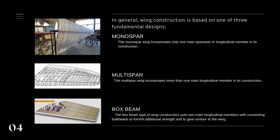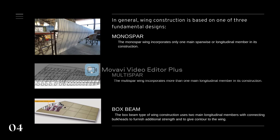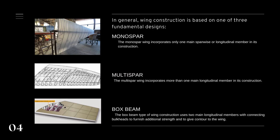The box beam or box spar uses two main longitudinal members with connecting bulkheads to furnish additional strength and to give contour to the wing. Tensile and compressive stresses are carried in the top and bottom of the box beam, and the sides act as webs to give the beam rigidity. The top and bottom of the box beam oppose the greatest loads and are the strongest parts of the beam.